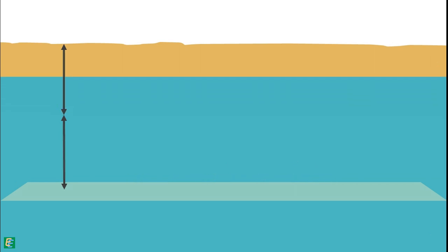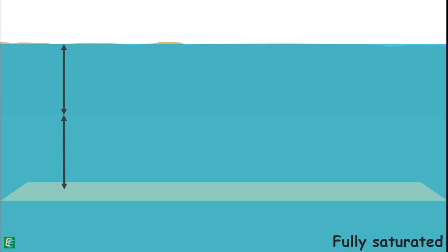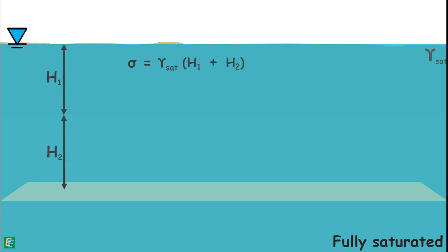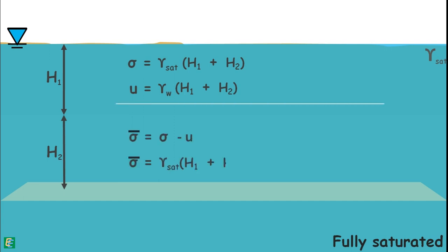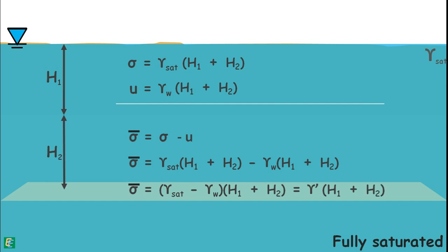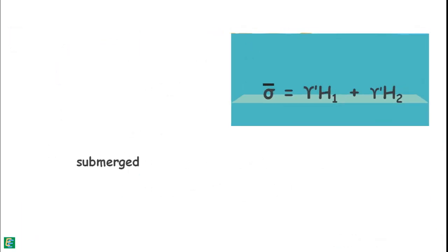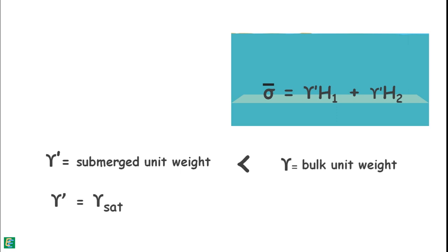Now, if the water table rises to the ground, the whole soil deposit becomes completely saturated and total stress at this plane is now caused by the whole saturated soil mass, which we can write as saturated unit weight of soil multiplied by the total height of the soil mass. Pore water pressure becomes the unit weight of water multiplied by the height of the soil deposit. Hence, effective stress can be calculated and again written as submerged unit weight of soil. We know that submerged unit weight gamma prime is less than bulk unit weight gamma because of the buoyancy factor.